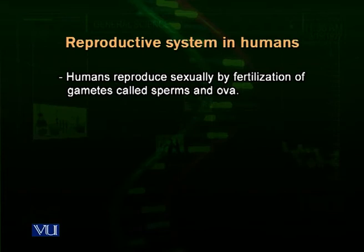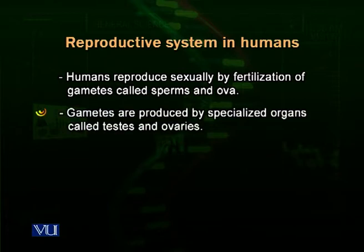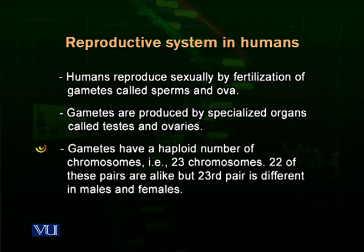Humans reproduce sexually by fertilization of gametes called sperms and ova. Males produce sperms and females produce ova. Gametes are produced by specialized organs called testis and ovaries — testis in males and ovaries in females. Gametes have a haploid number of chromosomes; that is, 23 chromosomes are present in each gamete.